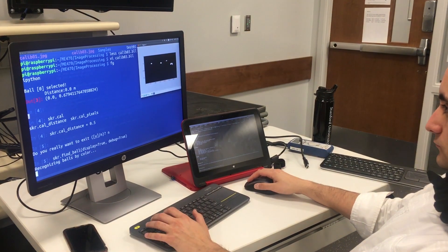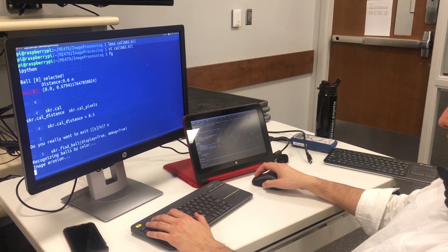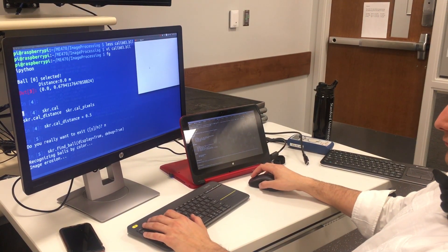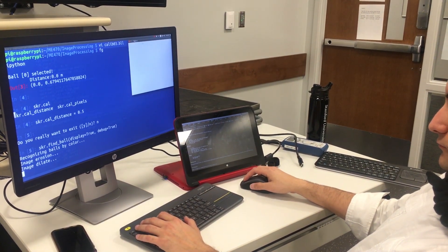Once an image is taken, it is converted to a binary image based on a predetermined range of RGB values. The binary photo then goes through a morphological erosion to reduce boundary regions.